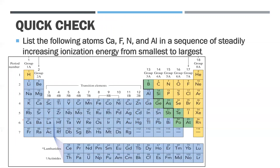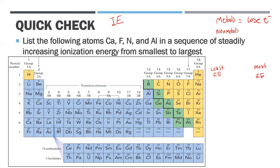Let's organize elements from increasing ionization energy — which one has the least ionization energy, often written as IE, and which one has the most? Think of it in terms of metals and non-metals. We know that metals lose electrons and non-metals like to gain electrons. If ionization energy is the energy required to remove an electron, who is going to have the lowest ionization energy?